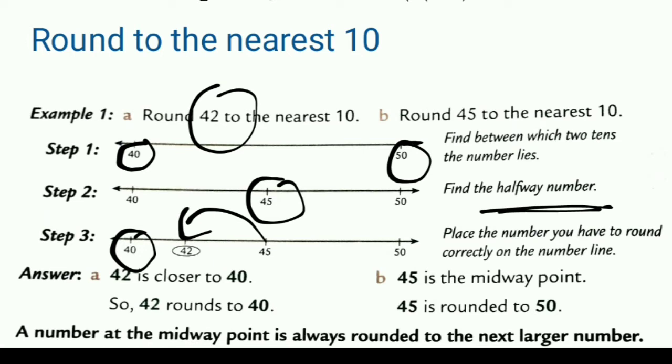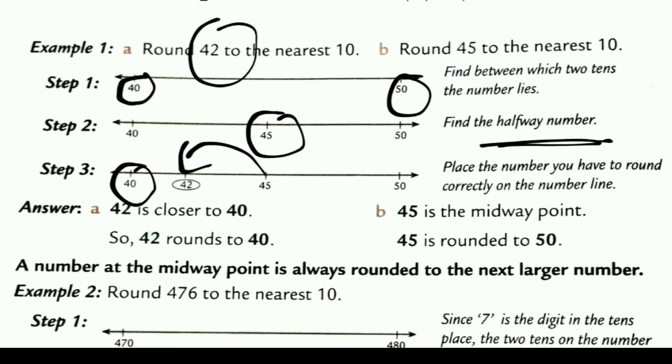Round 45 to the nearest 10. 45 is the midway point. It means it will go to next one, which is 50. A number at the midway is always rounded to the next larger number.